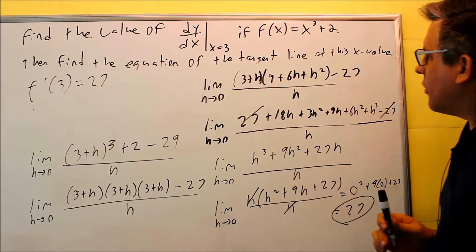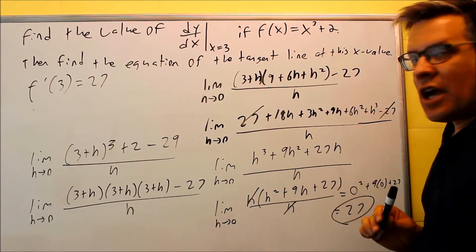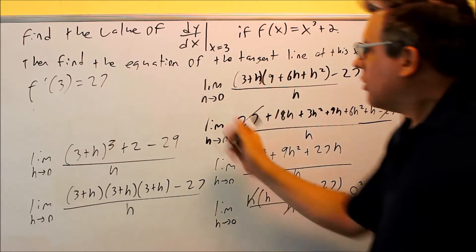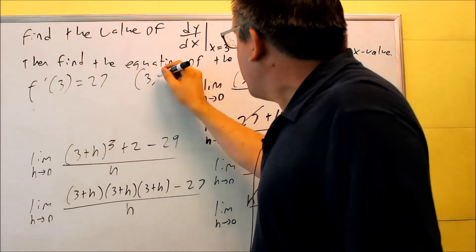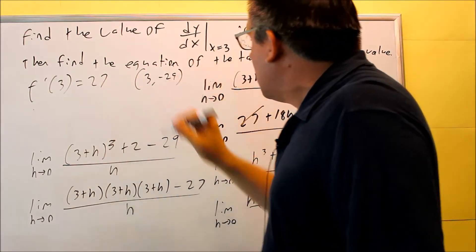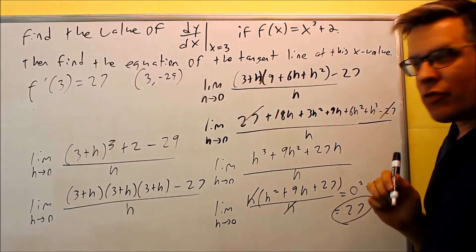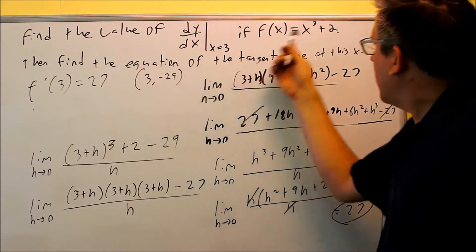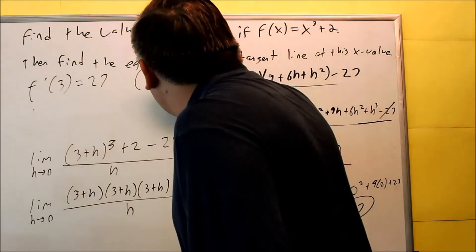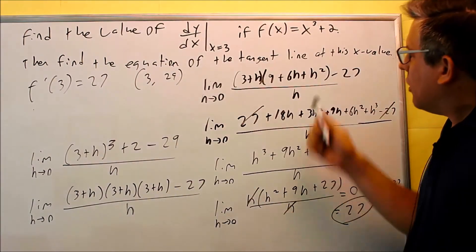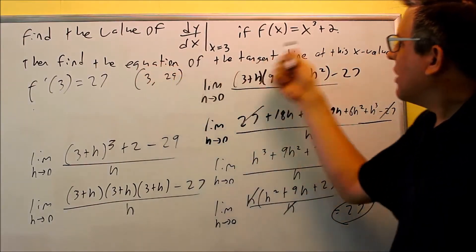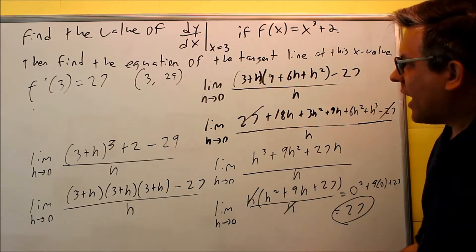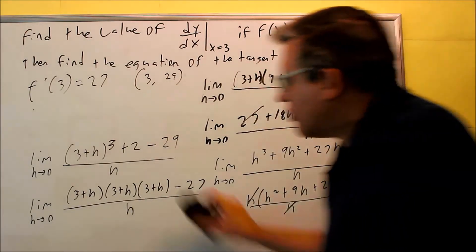Next, it says find the equation of the tangent line at this x value. This value right here, 29, originally we said that the point that we had there was this one. When I found f of 3 earlier, I put 3 in here, I got 29, yeah 3 and positive 29. So that's the point that is actually on this line here, x cubed plus 2, the point is 3 and 29. I'm going to use that in order to get the equation of a tangent line.